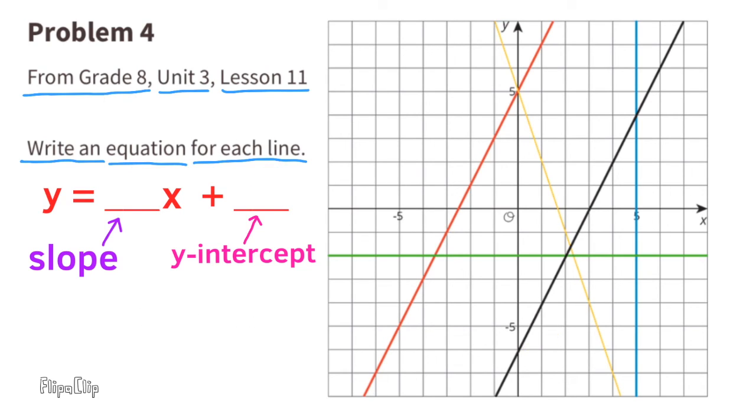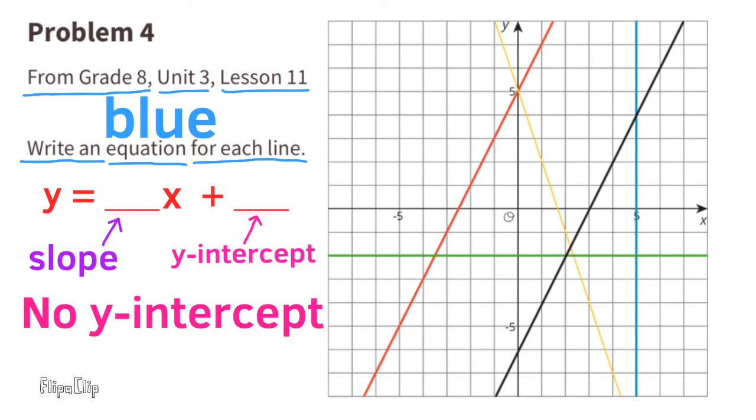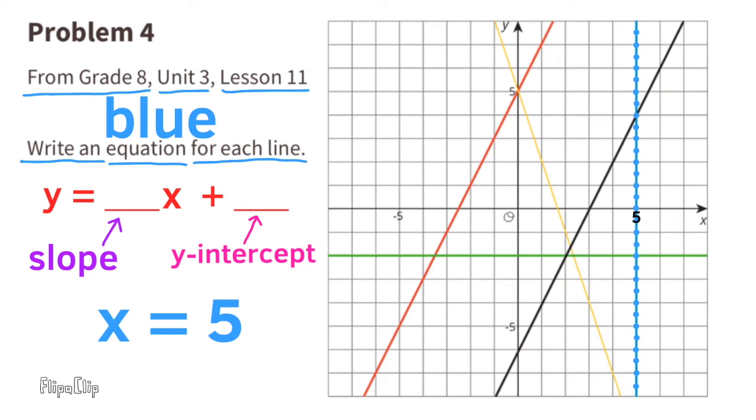And finally, let's look at the vertical blue line. The vertical blue line has no slope. It's also called an undefined slope. And you'll notice that it doesn't have a y-intercept either, because it's a vertical line. The x-intercept is 5. The x-value will always be 5, no matter where you are on this vertical line. The equation reads x equals 5.